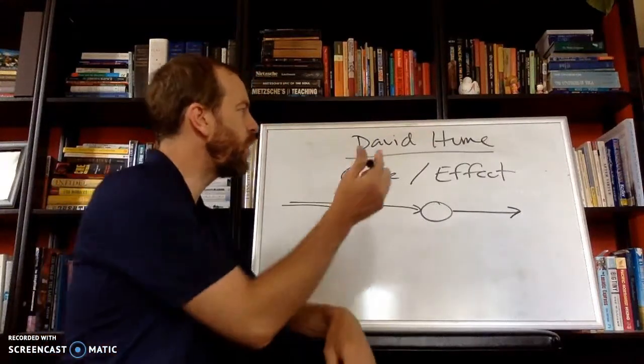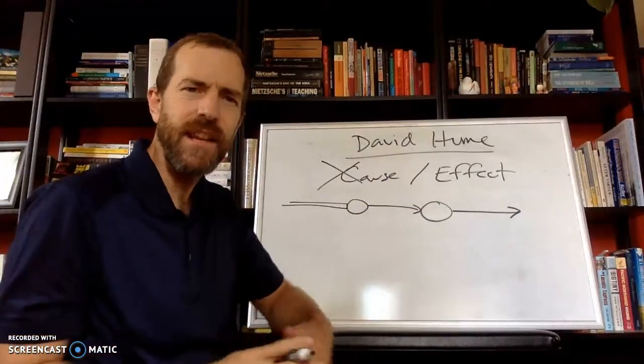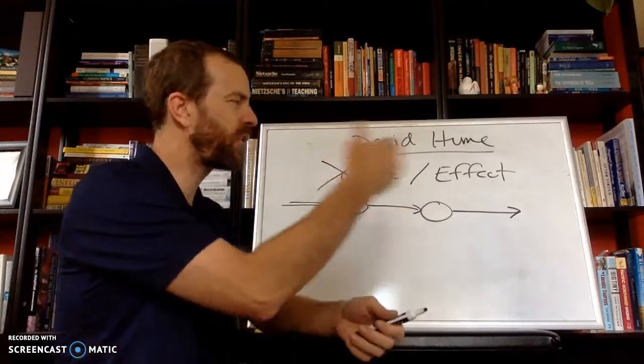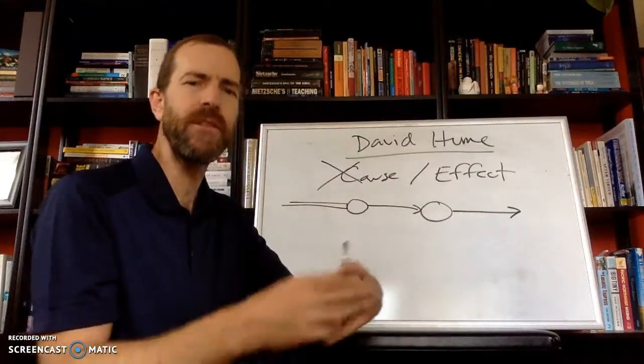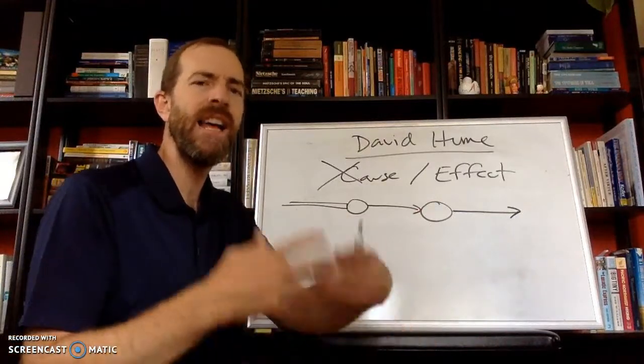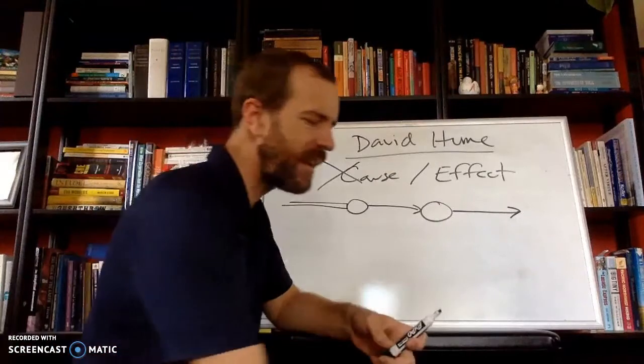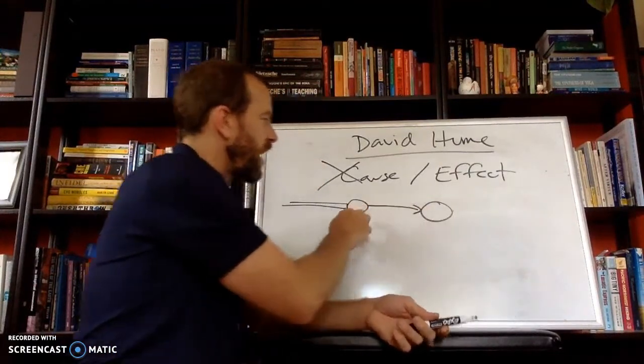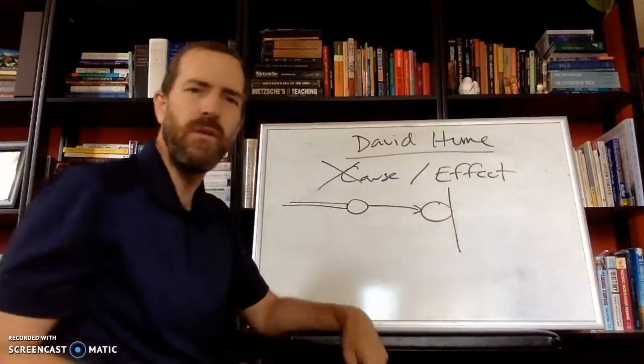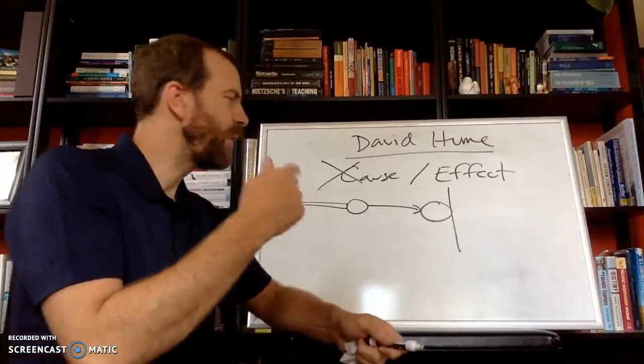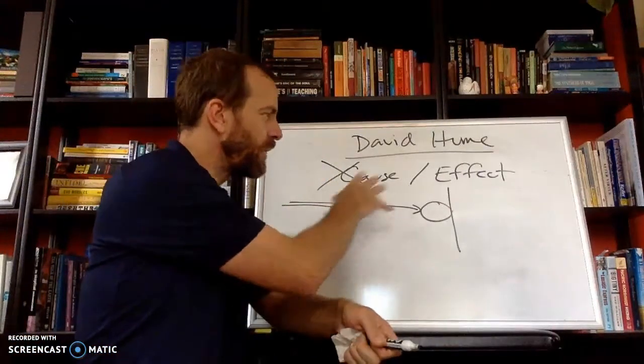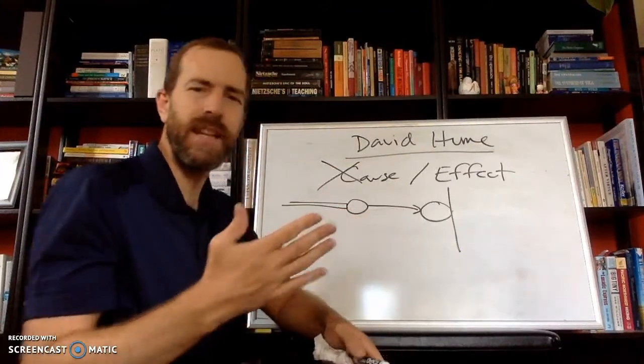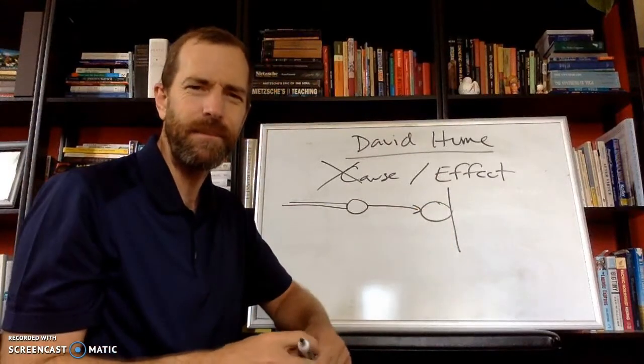But David Hume would say that we have no knowledge of cause and effect because we don't trace cause and effect back to a sense experience itself. We just, when we trace it back, we just experience one thing happening after another. But correlation does not imply causation. So all we would need is some random moment where our cue ball hits the other ball, but that ball doesn't move. If that were to happen, it would suddenly cause us to doubt the causal relationship we inferred between these balls. And the only reason that we say that they're causally related is because we just haven't experienced that occurring yet.